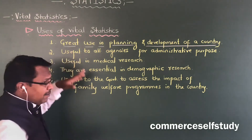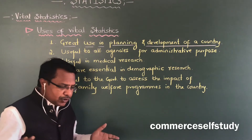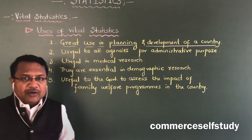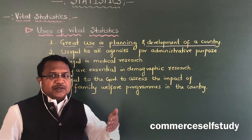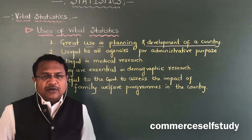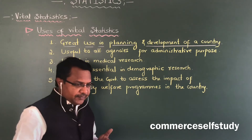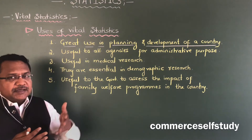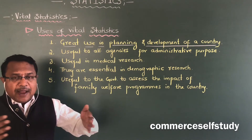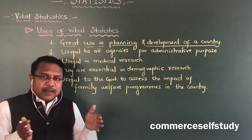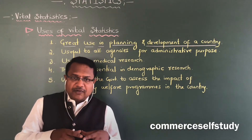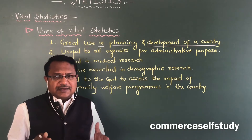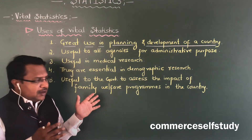We need to know the total population — how many births are taking place, how many people are dying, and what are the reasons or causes for that. How many accidents are taking place? Based on that, the government will plan properly — city planning, whether they want to come out with big roads, metro projects, or flyovers. These all things come under the planning process, and vital statistics helps in planning.